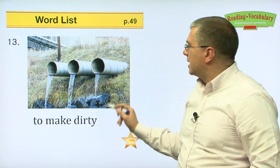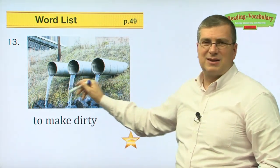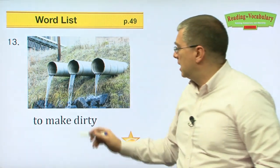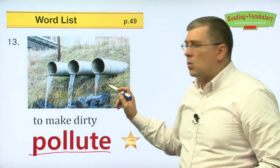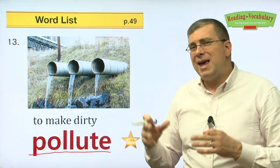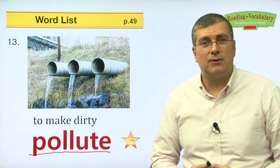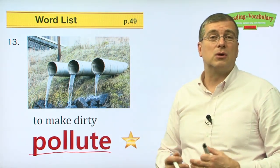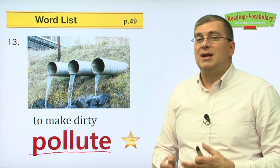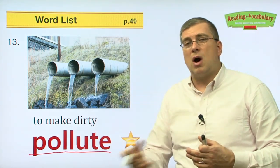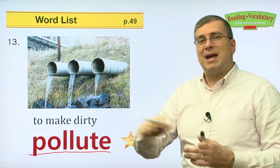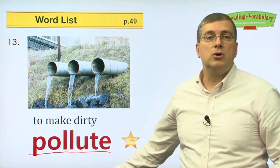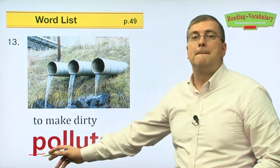Number thirteen. To make dirty. Imagine this is some chemical coming out of pipes into a stream, making the stream or river dirty. What is it doing? It's polluting. When we make the environment dirty, we are polluting the environment. Sometimes factories or industrial places will pollute the environment because of what they're doing — their activities make dirty water, dirty air, or dirty land. If we make something dirty, we are polluting the environment.